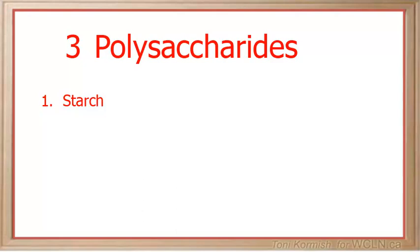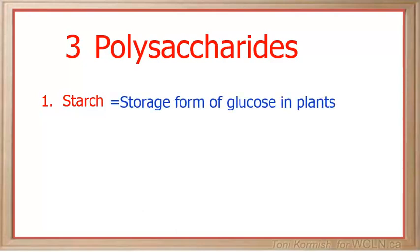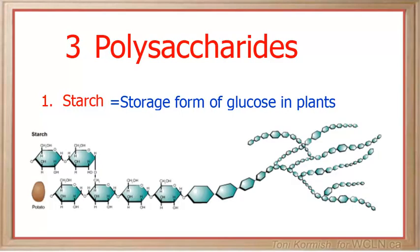Starch functions as the storage form of glucose in plants, and we can identify it when we see a long chain of monosaccharides bonded together with just a few side chains branching off of it.